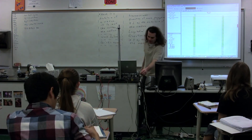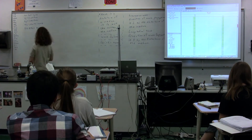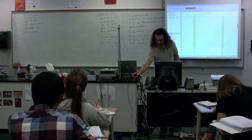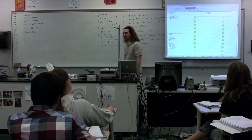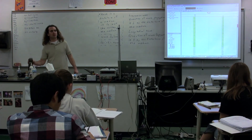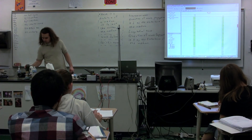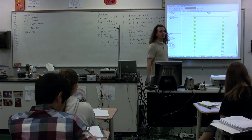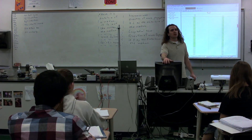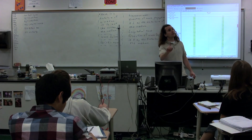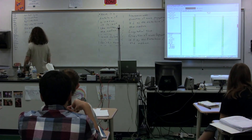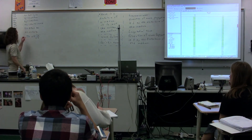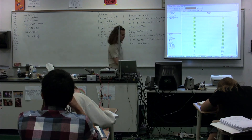We also know that this mass is half a kilogram. With the period and the mass, we can figure out the spring constant. Using T equals 2π times the square root of M over K, we know the mass, we know the period, and we can solve for the spring constant.